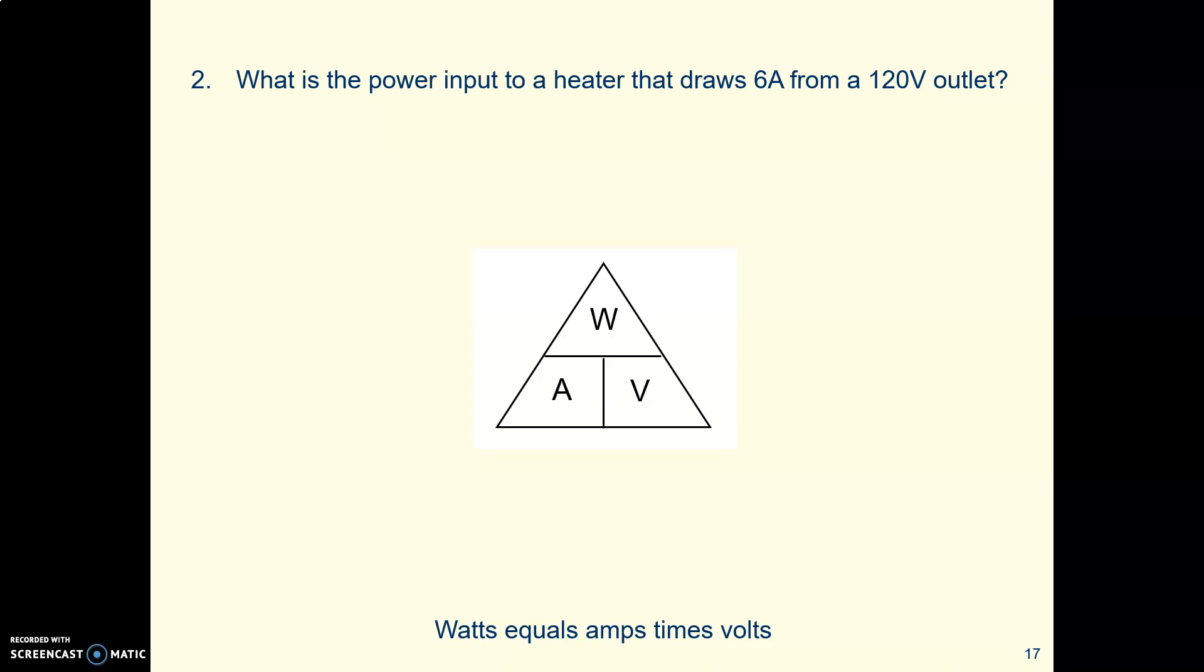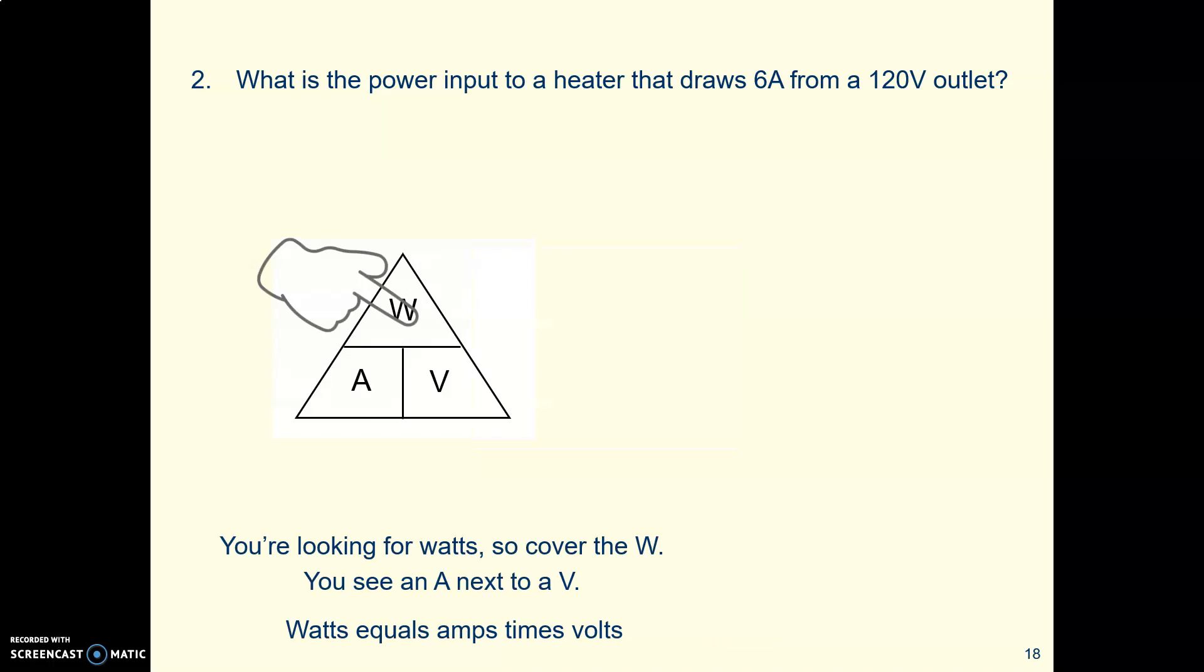The question says, it wants to know what is the power input? In other words, how many watts? It's a heater that's drawing six amps, and you've got it plugged into a 120 volt outlet, standard outlet, standard receptacle in your wall. What is the power? You're looking for watts. So that's the one you cover up. Cover up the watts, and you are left with an amps and a volts, an A and a V next to each other. And that's good, because watts is amps times volts. So you're going to multiply amps times volts. They tell you you've got 6 amps, and you've got 120 volts. So the wattage is going to be 6 times 120, and I'll let you calculate that.